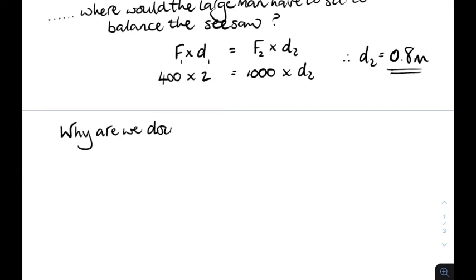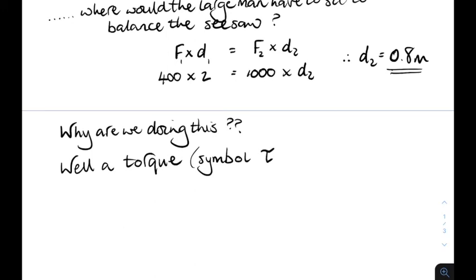Why are we doing this? Because force times distance, a force acting at right angles to a distance from an axis of rotation, is a torque. Now, torque's got a symbol. It's a Greek letter. It's called tau, T-A-U. Maybe you heard that name last year when you were doing the particle model, tau.